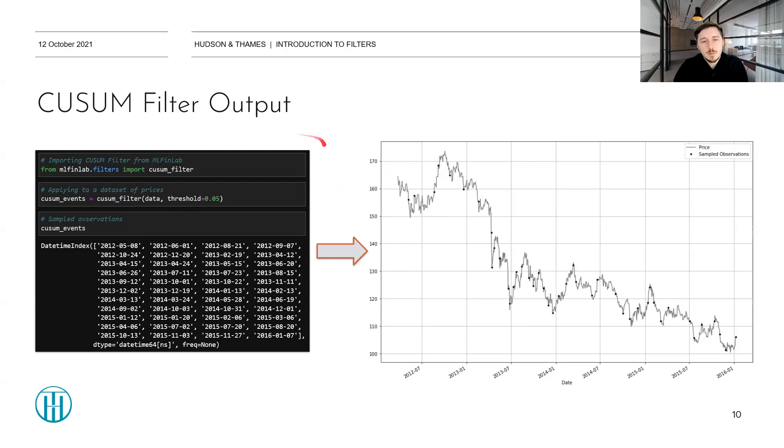Also, I'd like to denote that the code in the MLFinLab package was slightly changed from the original code from the book from Professor Lopez de Prado for two reasons. One, to be able to apply the CUSUM filter not only on, say, price series, but also on volatility series. And B, for the threshold not only to be a fixed value throughout all the observation period, but for it to be a series of values, which means that the threshold can be changing as time progresses, and maybe the properties of the underlying process are changing.